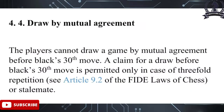Players cannot take a draw by mutual agreement before Black's 30th move. A claim for a draw before 30 moves is permitted only in the case of threefold repetition.